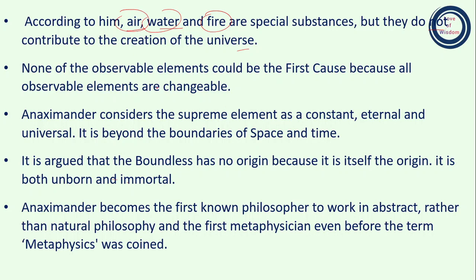None of the observable elements could be the first cause because all observable elements are changeable — they change moment to moment. Air, water, fire — all are changeable. Therefore, these changeable elements cannot be the first cause. If something is the first cause, we must accept an entity which is permanent, not changeable, and not temporary. So Anaximander says we cannot consider water or any other element to be the first cause. Anaximander considers the supreme element as constant, eternal, and universal.